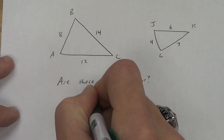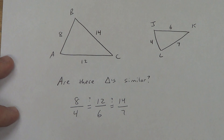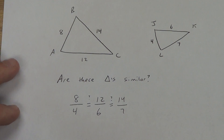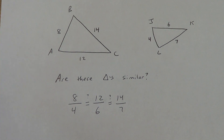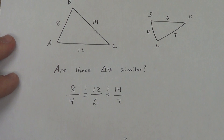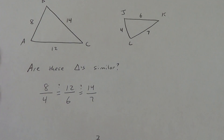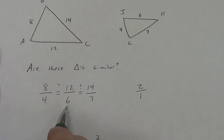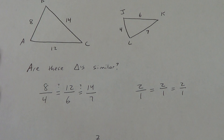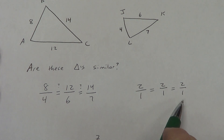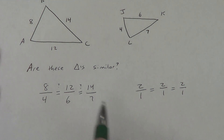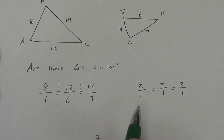Now we check to see if these ratios are equal — I put a question mark because I don't technically know yet. Two ways: reduce all the fractions, or cross multiply. If we reduce: 8 over 4 is 2 over 1, 12 over 6 is 2 over 1, 14 over 7 is 2 over 1. Every fraction has the same ratio — they're proportional. The scale factor is 2 over 1. So yes, the triangles are similar by the Side-Side-Side Similarity Theorem.